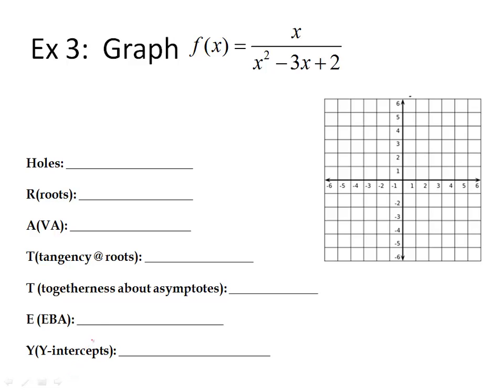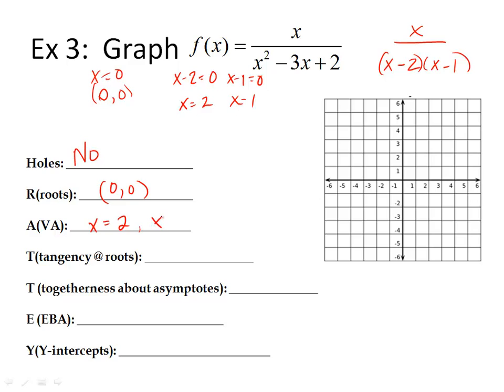Next one. Factor first. Remember, x over, I need to factor this. You can use NIPTARM. You can use box. Whatever method you use is fine. Just have to be able to factor. Alright. Now, I look to see, are there any holes? No common factors on top and bottom, so there are no holes. Roots. I set the top equal to zero. So my root is at (0, 0). Denominators. I'm sorry. Vertical asymptote. Take the factor with the denominator. Set them equal to zero. So x is 2, x is 1. So I have an asymptote where x is 2 and where x is 1.